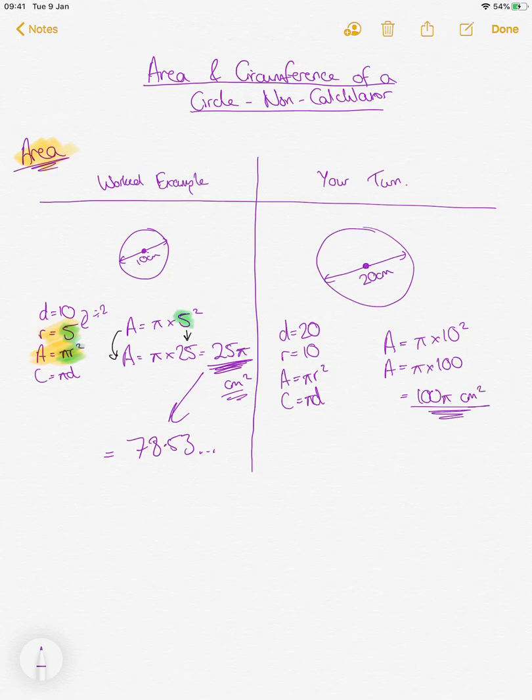My final answer is 100 pi centimetre squared. That's my answer in terms of pi. I've done it without a calculator. The only calculation I really had to do was 10 squared, which is 100. Everything else was just, I just needed to know that was the diameter, the radius, area, and circumference. You just need to memorise those formulae.